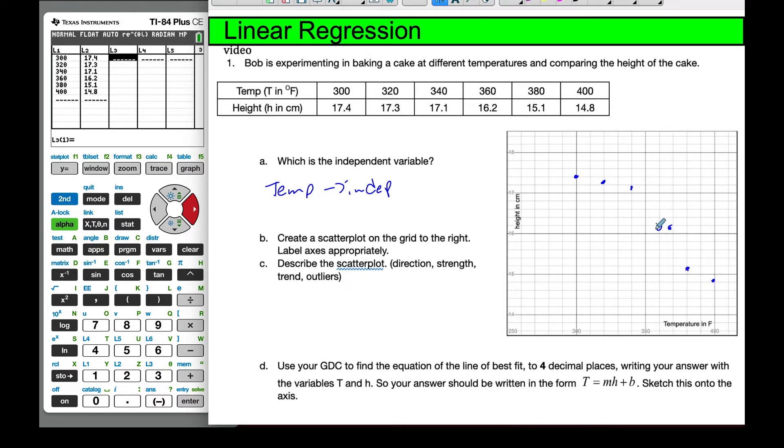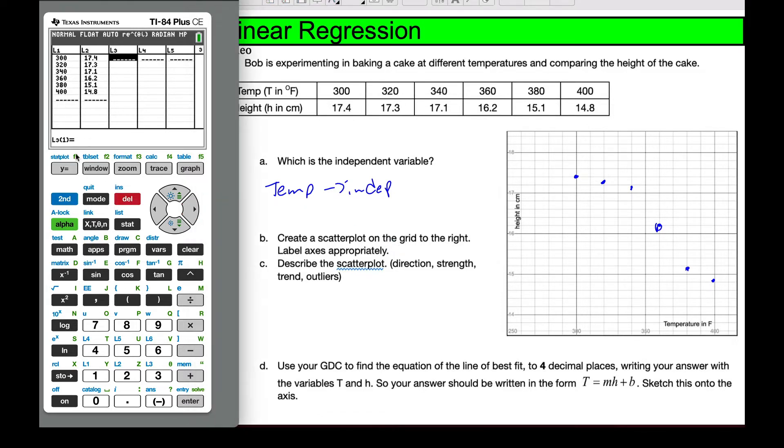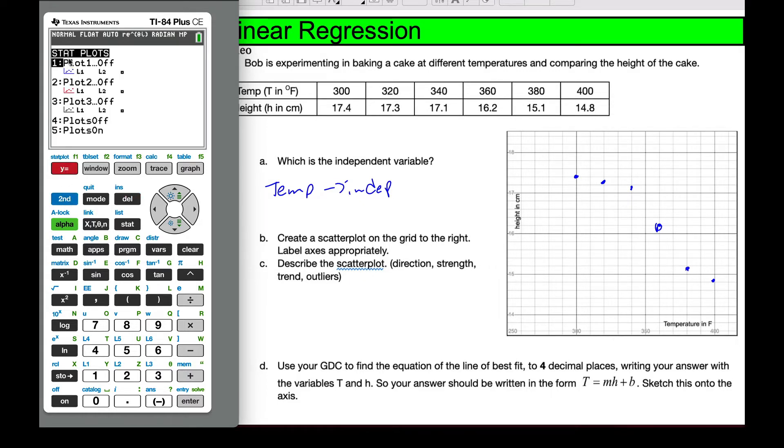And so here is my scatterplot of all the scenarios. If I look at my calculator, I can also look at it here. So I put the values in. If I go to 2nd y equals, which is the stat plot, I'm going to go to number 1. I'm going to turn on my plot. I have x and y in my list here. And then I'm going to zoom to number 9, which is zoom stat. It looks at my list, and it makes an appropriate window. And so there is my scatterplot.